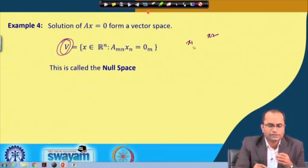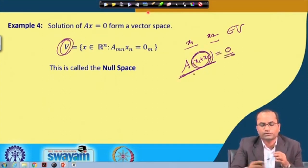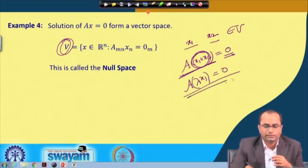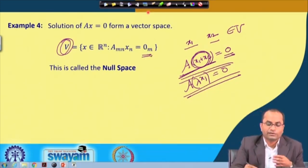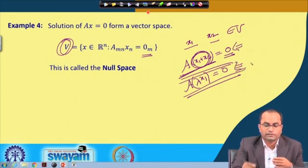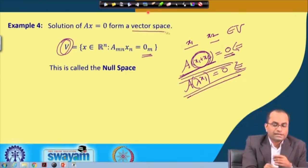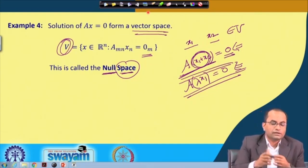Whenever we take two elements x1 and x2 from this set V, the sum x1 + x2 is also a solution because A(x1 + x2) = 0. Also, A(lambda·x1) = lambda·Ax1 = 0, so lambda·x1 is also in V. This is special for the homogeneous system where the right-hand side is 0 — for a non-homogeneous system these closure properties do not hold. So for the homogeneous system, the solution set is a vector space, called the null space of matrix A.